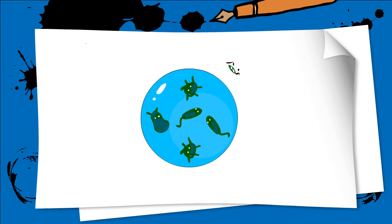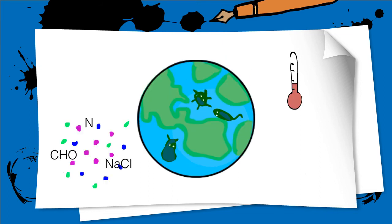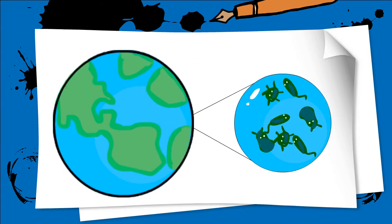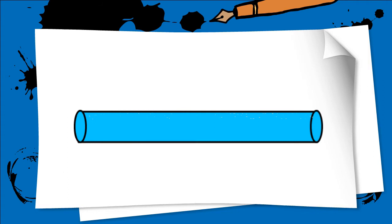However, plankton can only survive and reproduce under certain conditions that only exist in some parts of the ocean. How does the size of a plankton-friendly pocket of water affect the population of plankton in the long run?